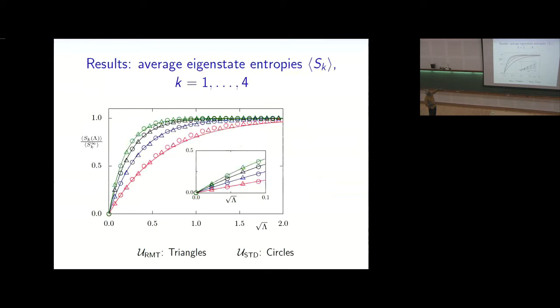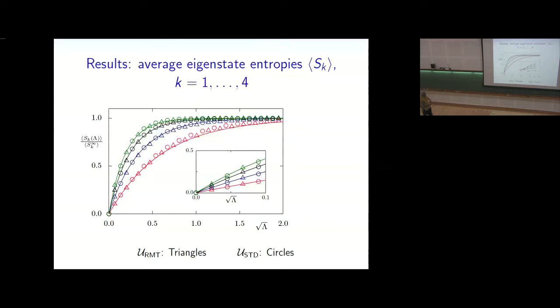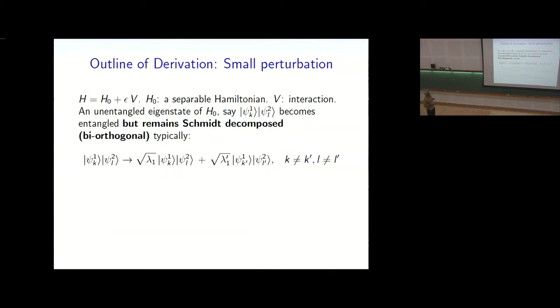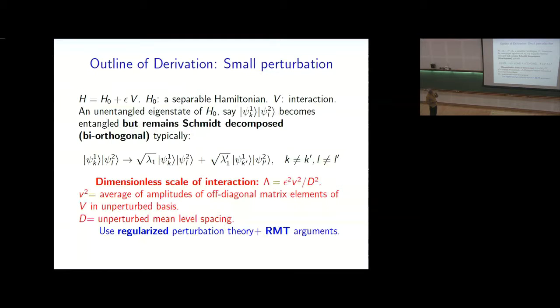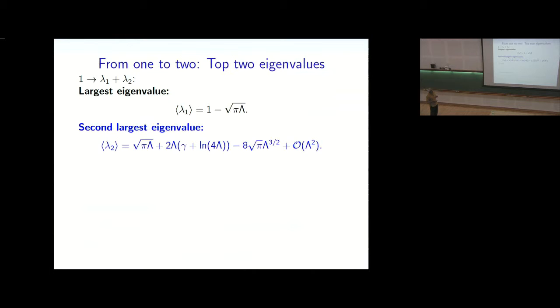So there is very simple formulas. And here are the numerical curves. There's a random matrix theory on this. There is a dynamical system model corresponding to what Shashi was talking about. And the theoretical curves. And they are quite remarkably fitting. So there is a theory which I don't have the time to go by. But I'll just say that there is, it's a combination of a regularized perturbation theory, plus RMT arguments, and some really strange arguments, which enabled us to arrive at that. But I think I'll skip the details.